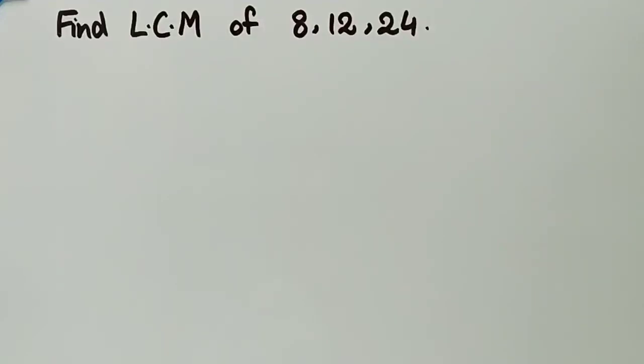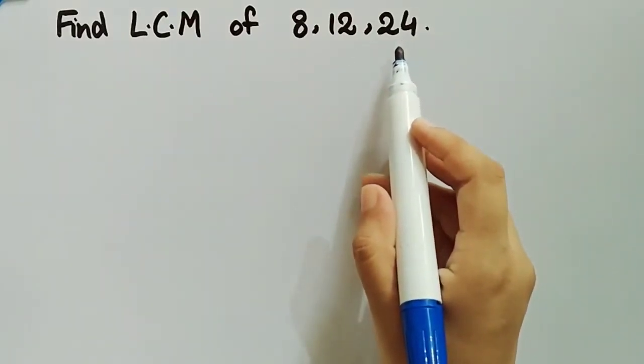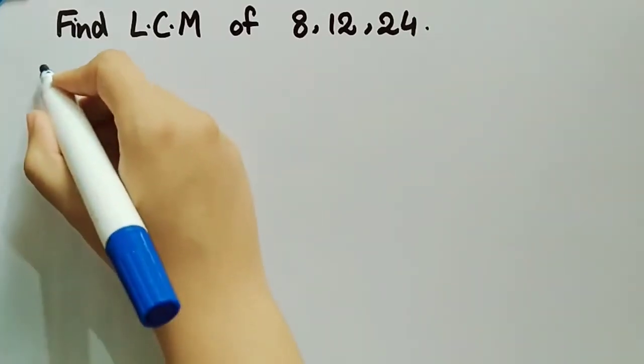In this video we will learn how we can find LCM of three numbers. In this case there are 8, 12, and 24 and we have to find LCM of these three numbers. For this, firstly we will write multiples of all the three numbers.